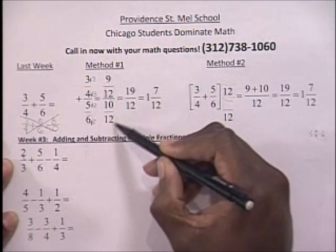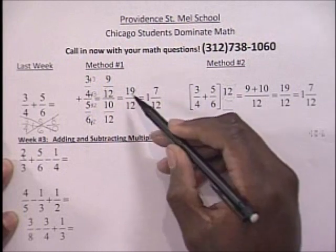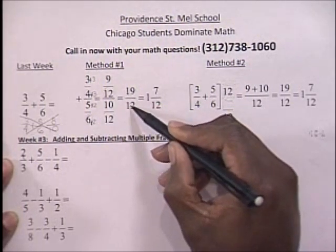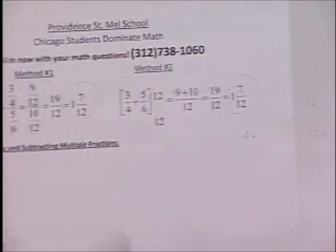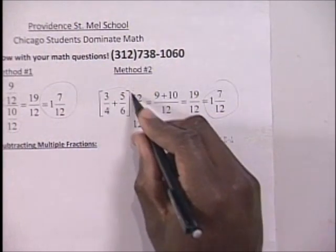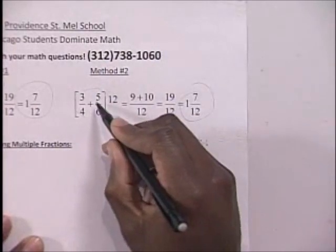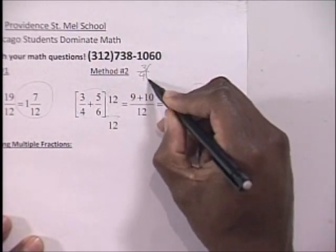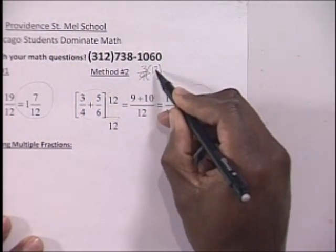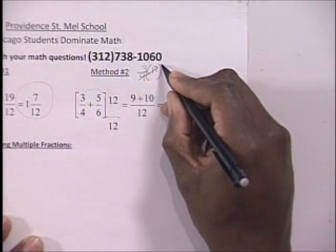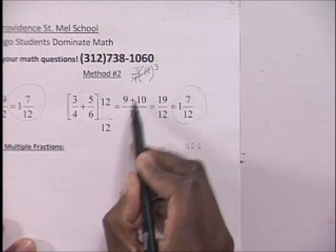You keep the common denominator of 12 — I made the mistake last week of making that 10, and I really apologize. You keep the common denominator of 12 and end up with 19 over 12, which simplifies to 1 and 7 twelfths. For the second method, we multiplied 3 fourths plus 5 sixths by 1. If you multiply 3 fourths times 12, the 4 and the 12 cross cancel to become a 3, and you end up with 3 times 3, which is 9.